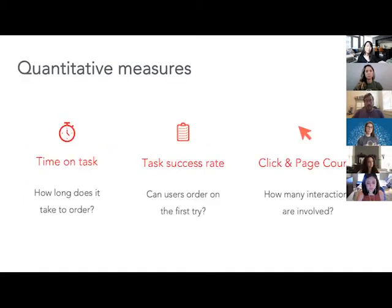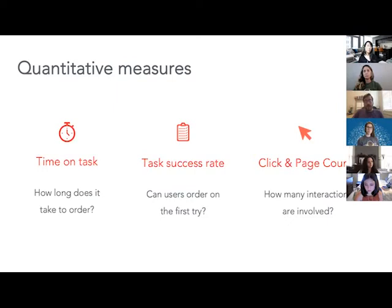We chose to measure these quantitative measures: time on task — literally from start to finish, how long did it take to go through the order; success rate — were they able to get through without making errors and put in the order on the first try; and click and page counts — how many steps and clicks did it take to get through.